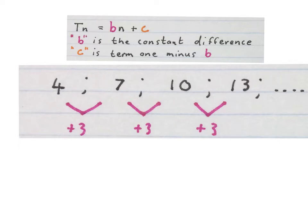We can write down this formula and we must remind ourselves b is the constant difference, so this 3 will go there. The c is term 1 minus b, so this 4 minus this number.